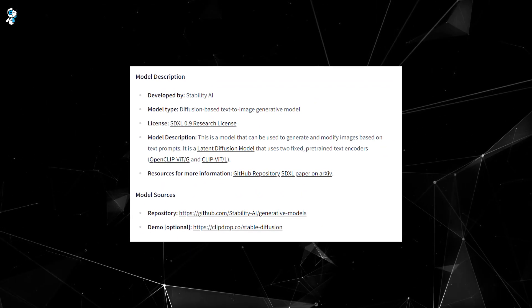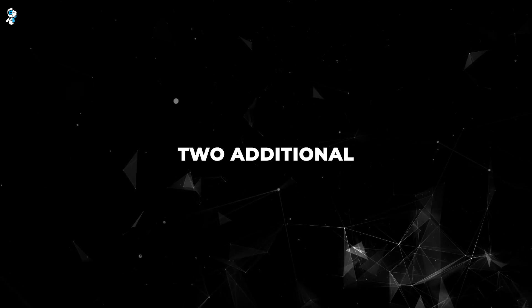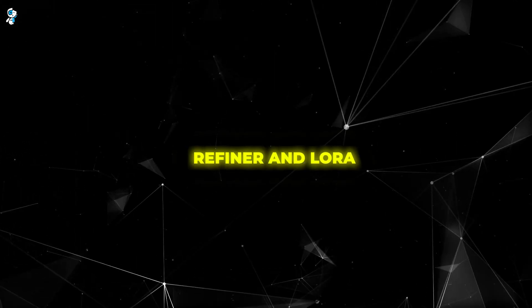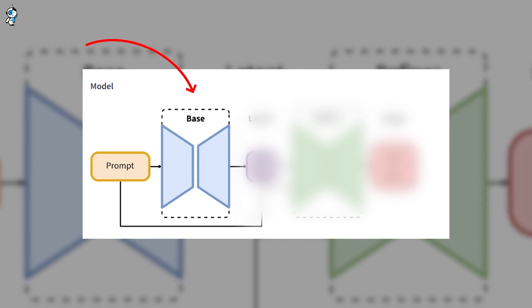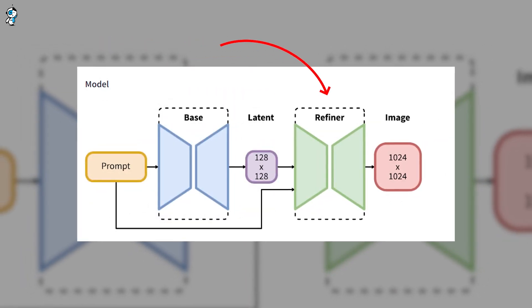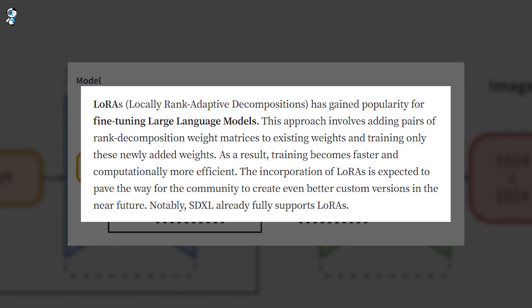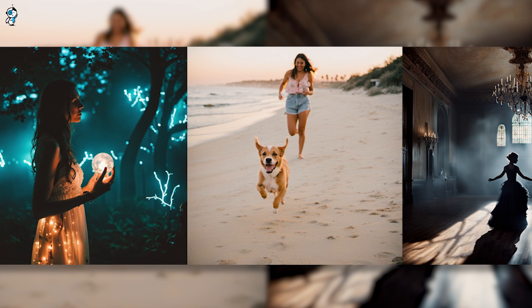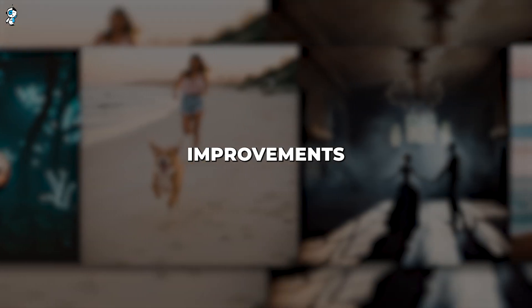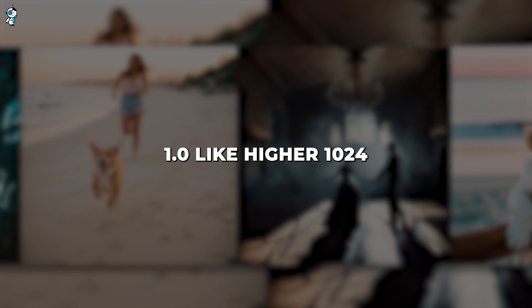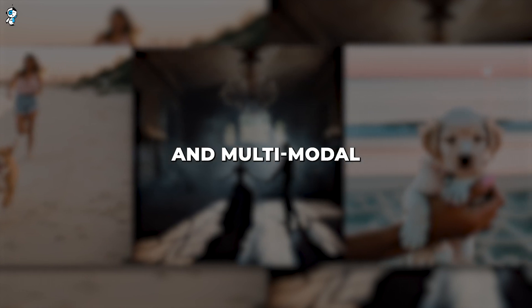One more major change with SDXL 1.0 is the requirement for multiple model files. The original SD was a single model. Now there's a base XL model plus two additional models: the refiner and LoRA. The base XL model is the core that handles image generation from your text prompt, producing the foundation. The refiner model then takes that initial low-resolution foundation and enhances it by filling in details. Additionally, LoRA adds some finishing touches by tweaking colors, contrast, and lighting for improved realism. SDXL leverages this multi-model pipeline to achieve significantly better end results, introducing higher 1024x1024 resolution, enhanced fine-tuning capabilities, and a multi-model pipeline for better image quality.